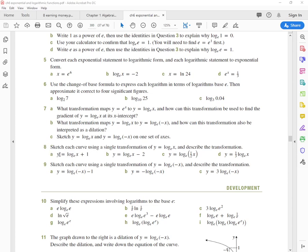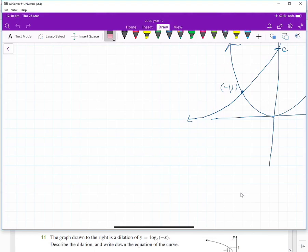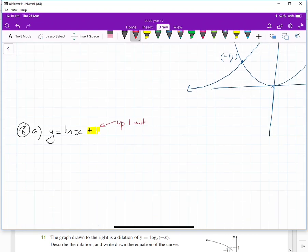The first one, 8a, is y equals ln(x) plus 1. I've just got this in the OneNote for exercise 6F. So if we have 8a, y equals ln(x), and then we're going to do the plus 1 to it. So that means it's going to transform it up one unit. This part here tells you that it goes up one unit. If it was plus 1, obviously negative 1 would mean it would go down one unit.